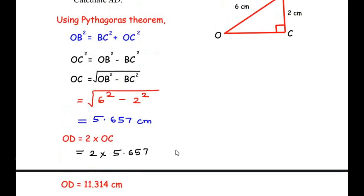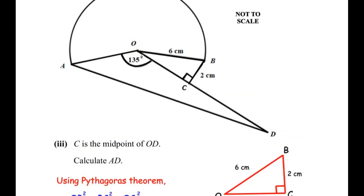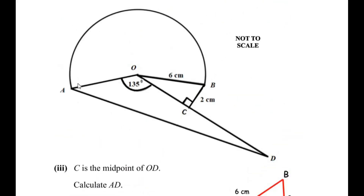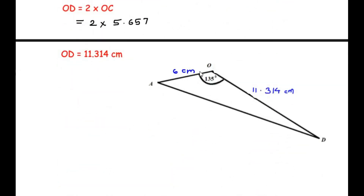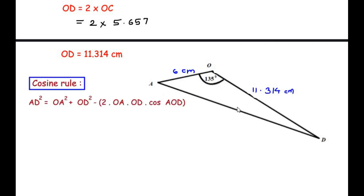Now that we have OD, we find the length of AD by considering triangle AOD. Here OA is 6 centimeters (the radius) and OD is 11.314. To find AD we apply the cosine rule: AD squared equals OA squared plus OD squared minus 2 times OA times OD times cosine of angle AOD.